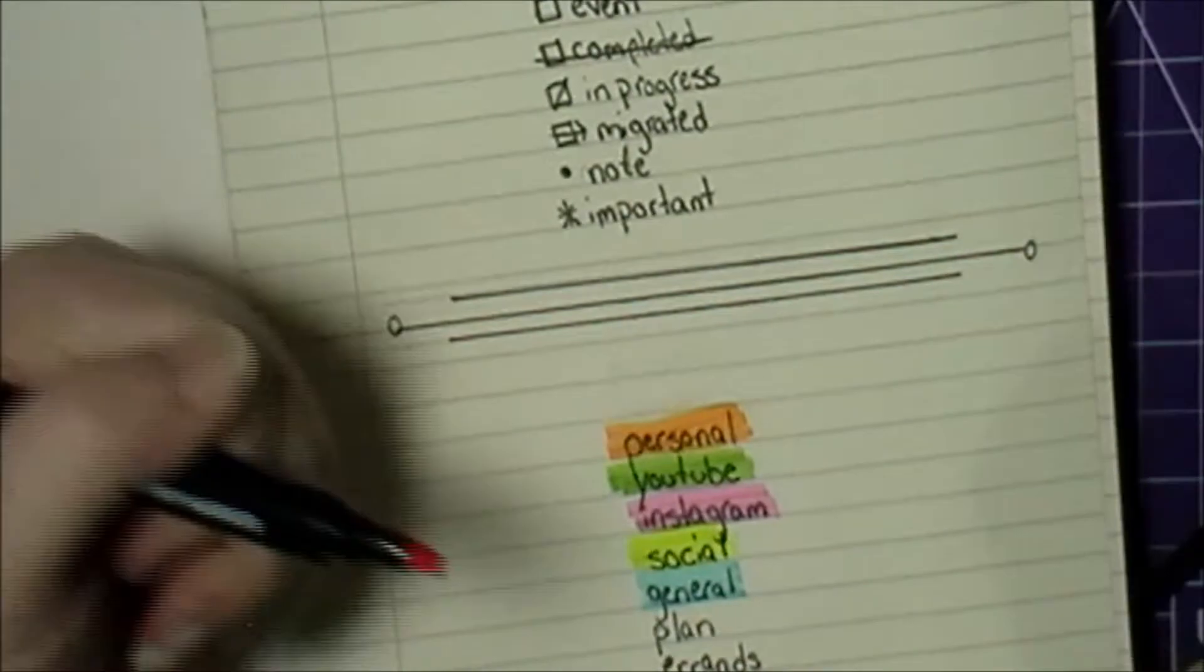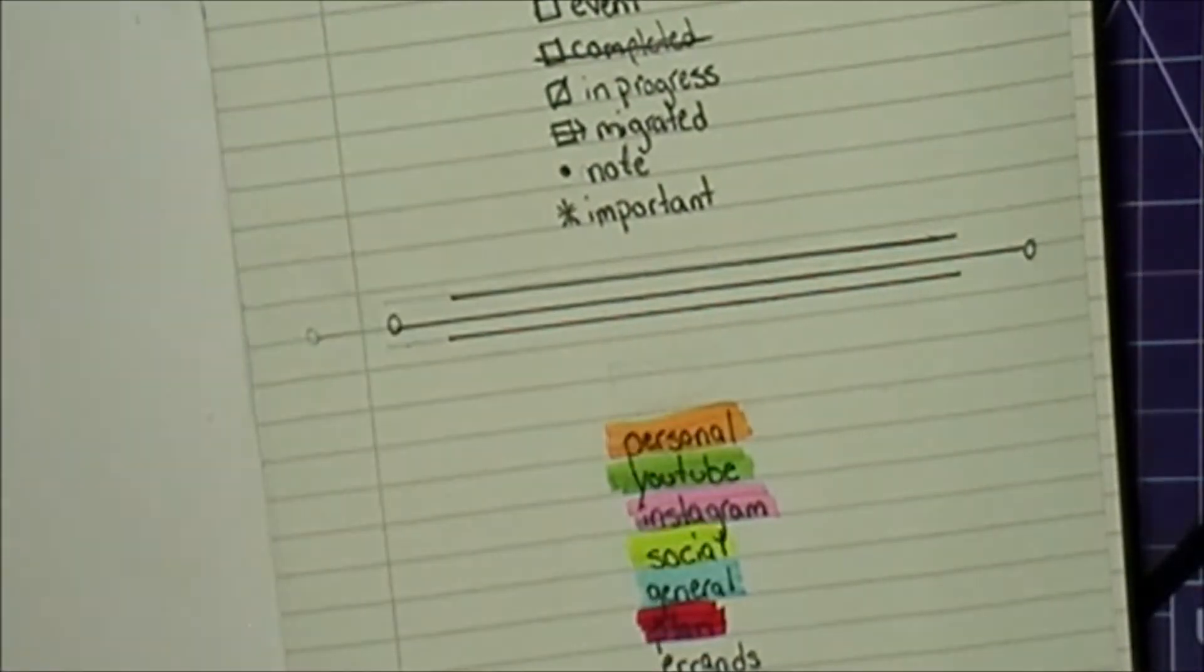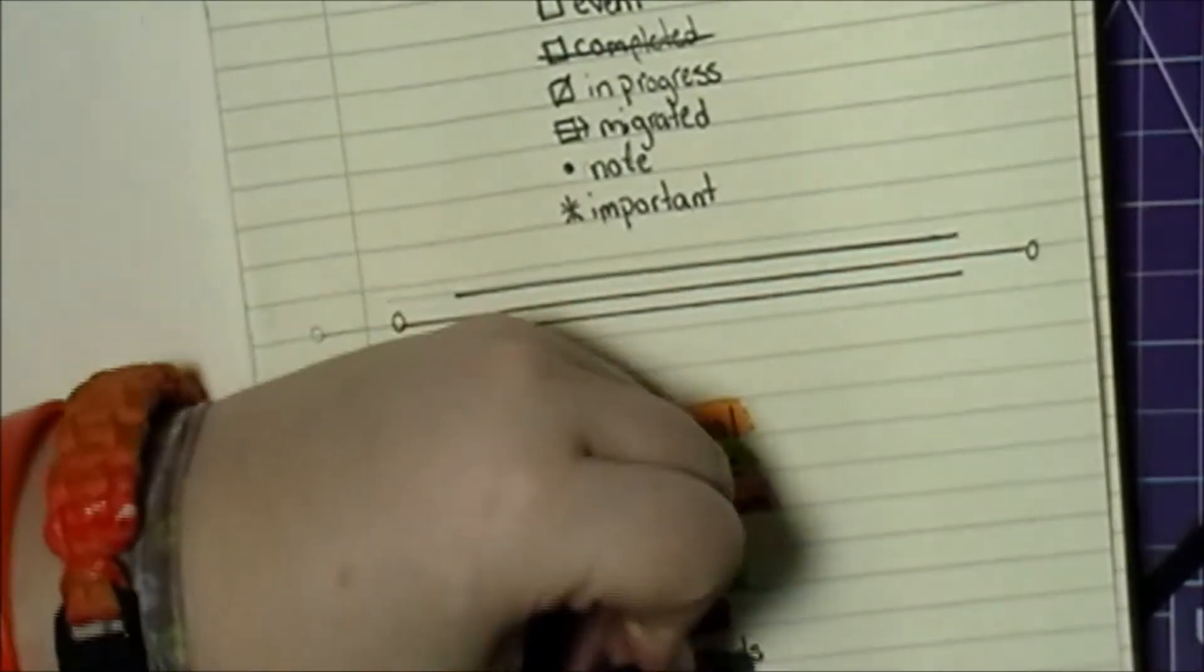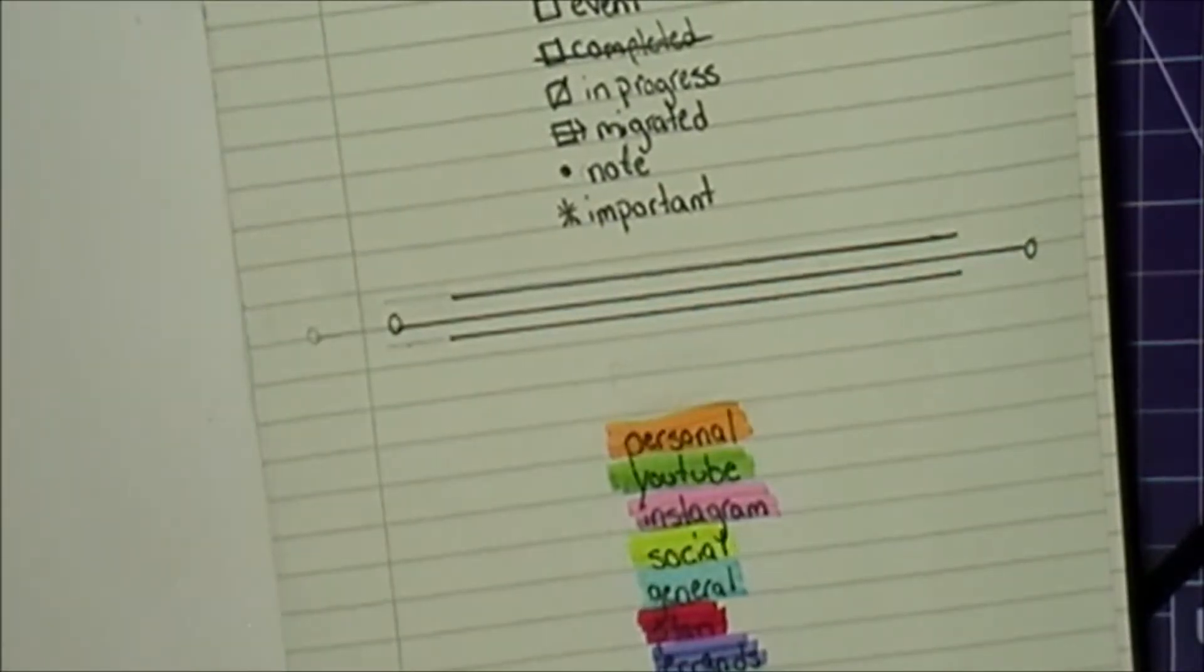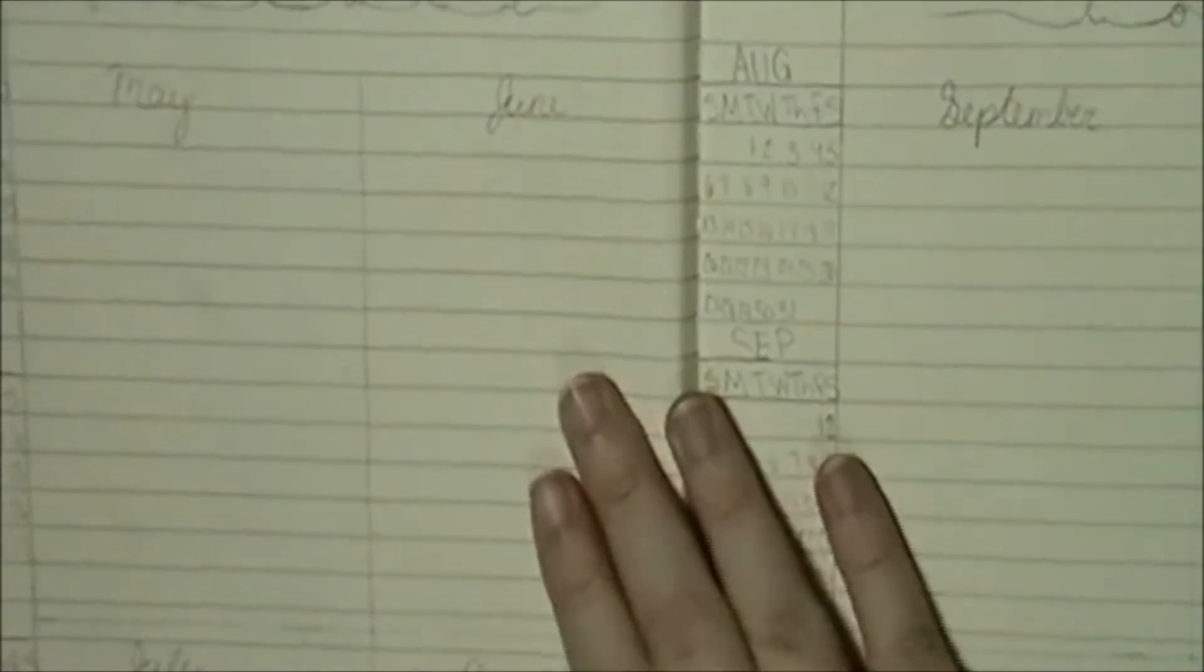And I also added a few extra icons for my key because my other bullet journal is mainly just for YouTube, but if I need to track any personal stuff, I have icons for that as well.